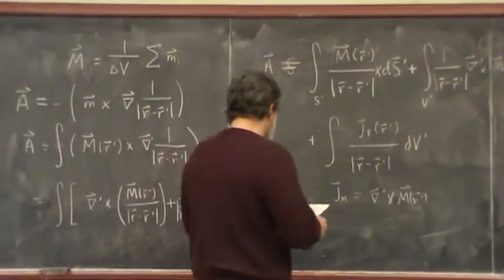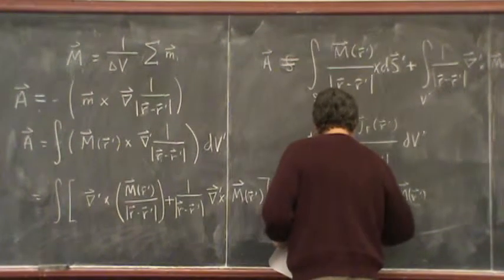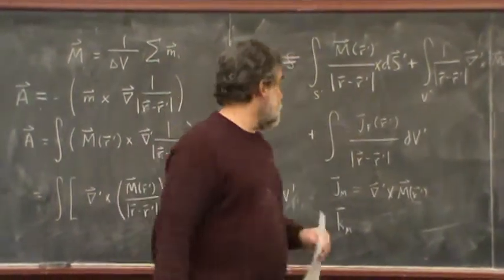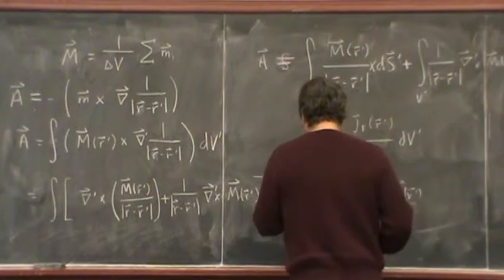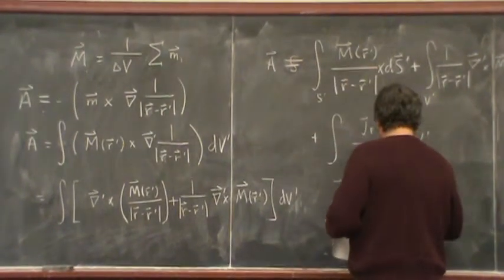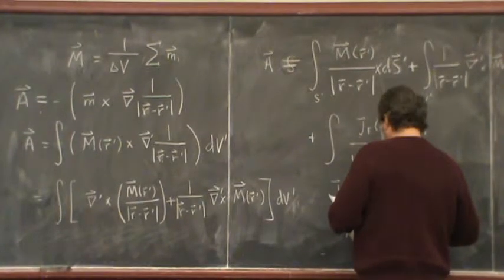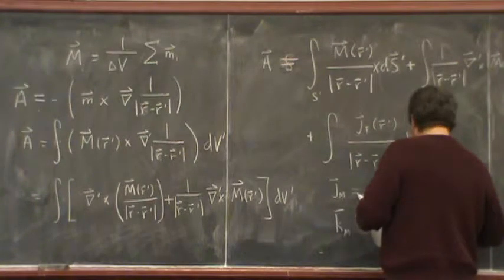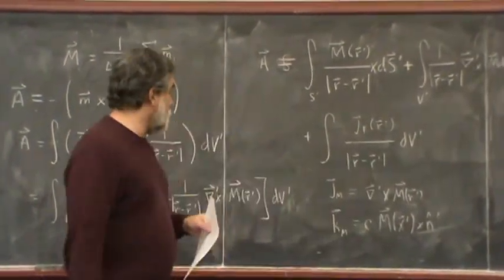And I will define the magnetization surface current density as M cross n-hat. And this says for sure that what Ryan claimed was what I should have done. The constant c needs to be on both of them.